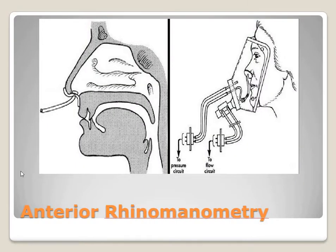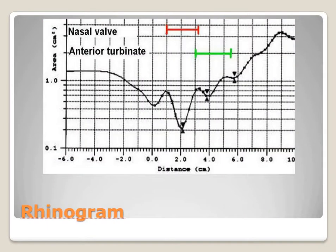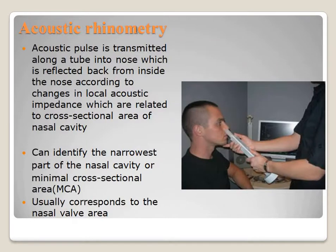Here we can see the placement for posterior rhinomanometry according to the location of the sensing tube. In acoustic rhinometry, an acoustic pulse is transmitted along a tube into the nose and reflected back from inside the nose according to changes in local acoustic impedance, which are related to the cross-sectional area of the nasal cavity. It can identify the narrowest part of the nasal cavity — the minimal cross-sectional area — which usually corresponds to the nasal valve area.